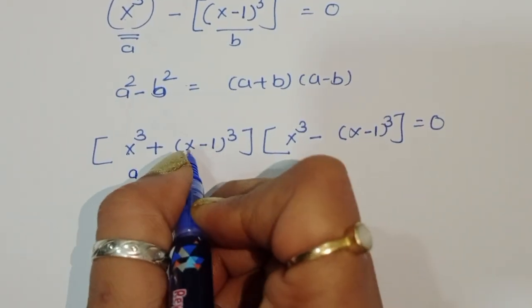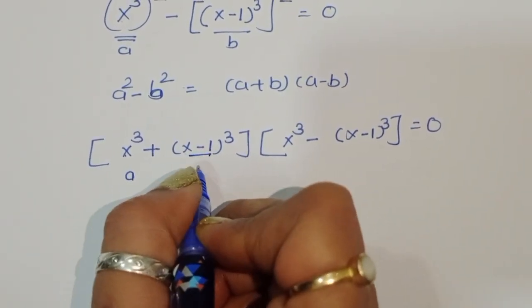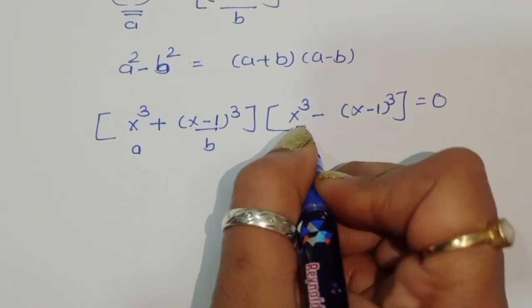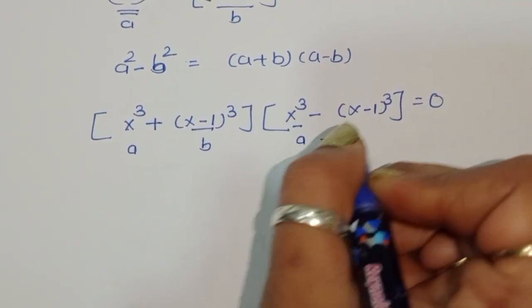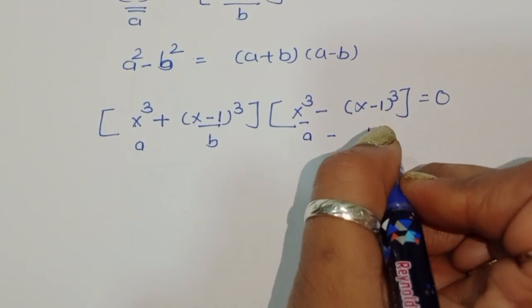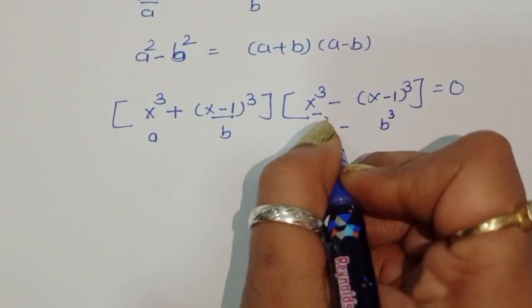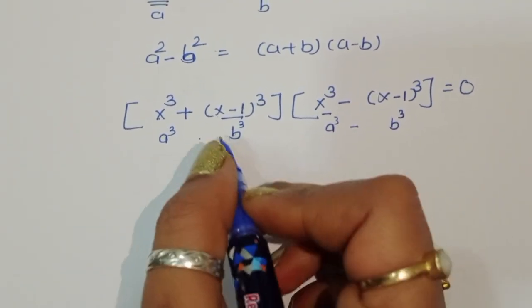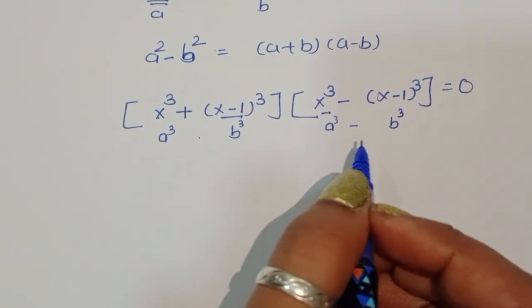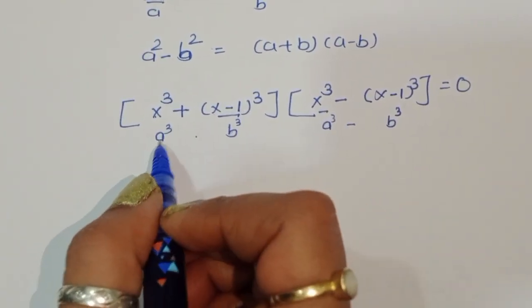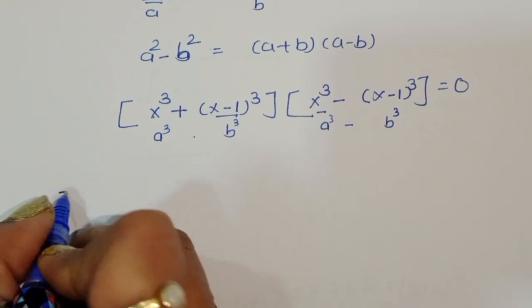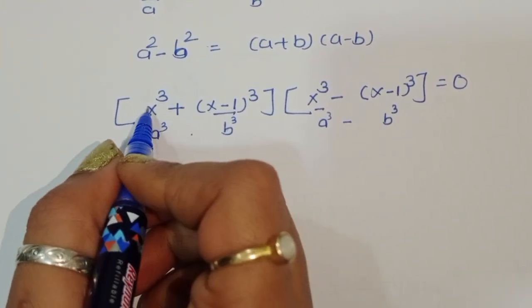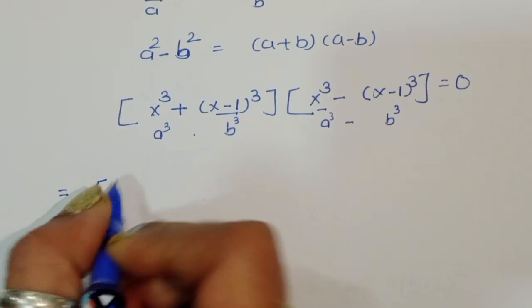So this is a³ plus b³ and here a³ minus b³. We now apply the formulas for a³ plus b³ and a³ minus b³ to each factor respectively.